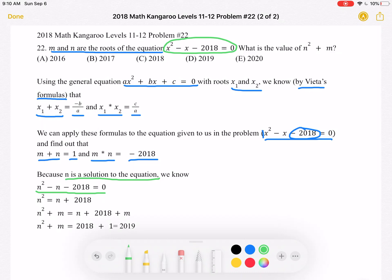Let's add n to both sides and get n² = n + 2018. And again, we're doing this because we know we're looking for n² + m. So we're trying to figure out what that is.